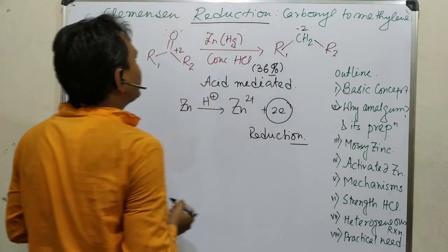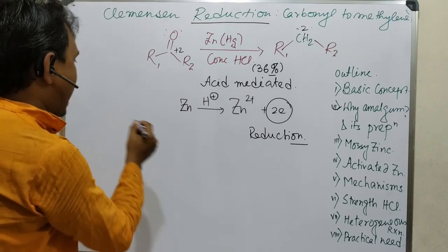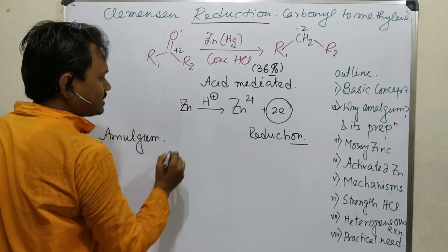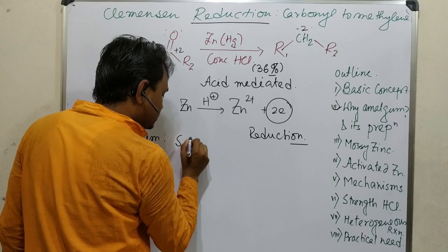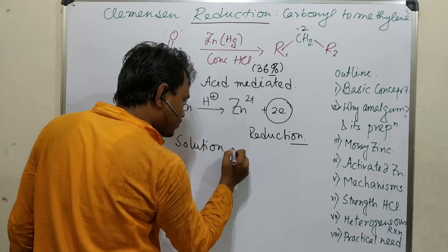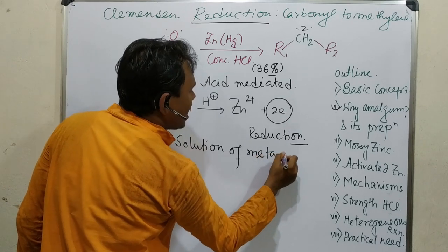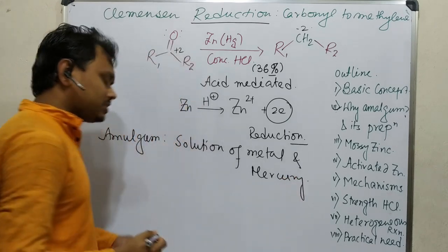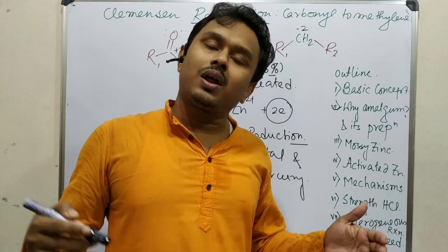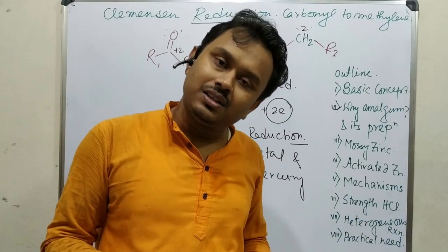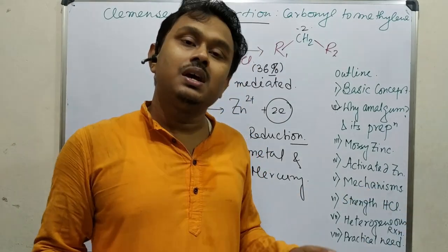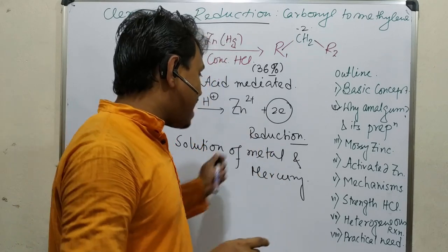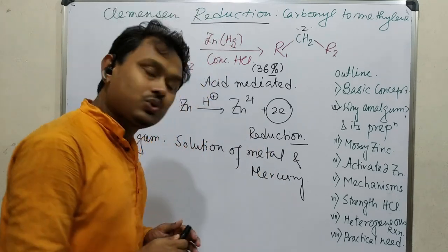Now, why amalgam? Amalgam is a solution of a metal and mercury. Generally we think of solutions as solid, liquid, or gas dissolved in a liquid, but there is one type of solution that is a solid-solid solution, and amalgam belongs to that category — it is a solid-solid solution of mercury and a metal.